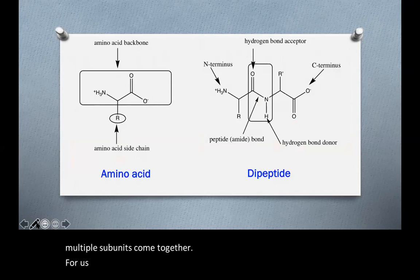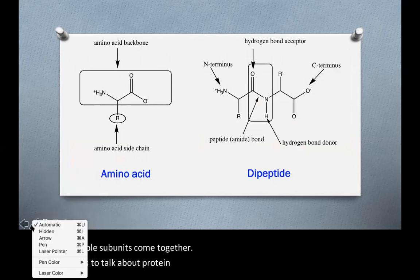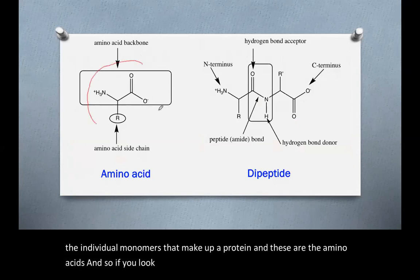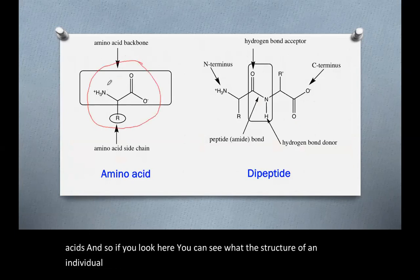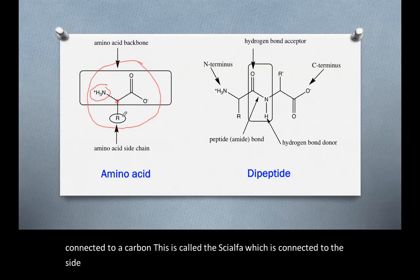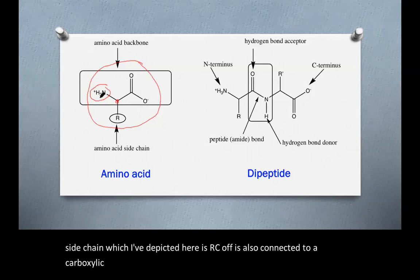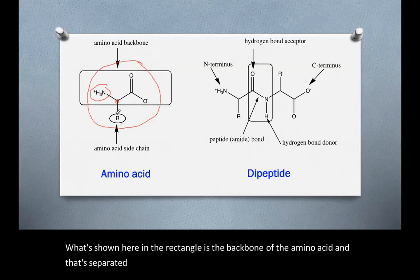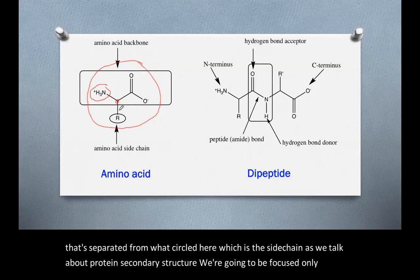To talk about protein secondary structure, I want to first talk about the individual monomers that make up a protein — the amino acids. An individual amino acid has an amino group connected to a carbon called the C-alpha, which is connected to the side chain, depicted here as R. The C-alpha is also connected to a carboxylic acid. What's shown in the rectangle is the backbone of the amino acid, and that's separated from the circled side chain. As we talk about protein secondary structure, we're going to be focused only on the backbone of the protein and ignore the side chains for now.